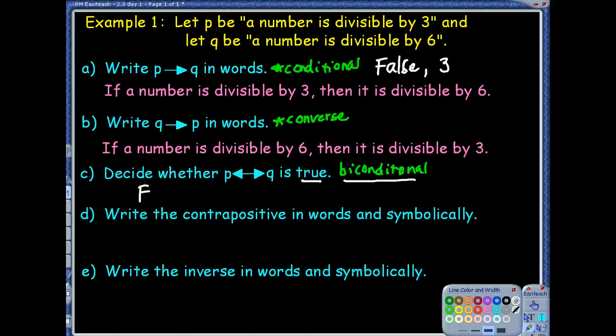Now, again, if the biconditional or the conditional was true, you would still need to look at the converse and decide its true value. Which, that is true. The converse, if you look at the converse, it says a number divisible by 6, then it's divisible by 3. That would be true. But for this example, we don't need it.